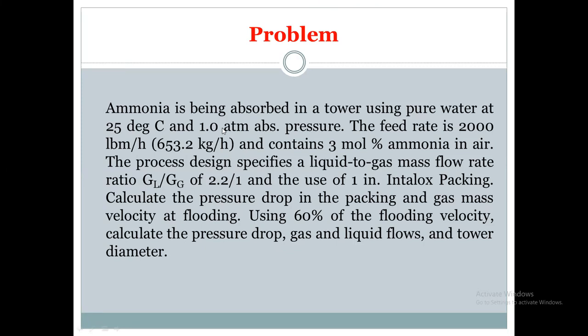In this case, we want to eliminate the contaminant ammonia in air by scrubbing it with pure water — that's the main application of gas absorption. The process design specifies that the liquid to gas ratio GL/GG should be 2.2 to 1, and the packing material is 1-inch Intalox packing. So we have a packed tower using this particular packing material.